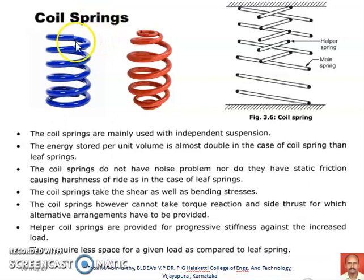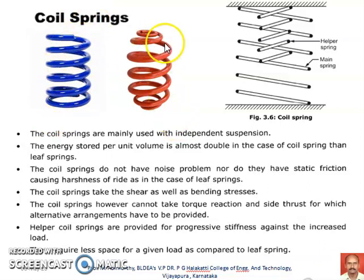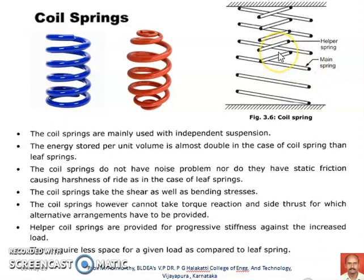Coil springs. As the name itself indicates, they are spiral coils used in the suspension system. One arrangement of the coil springs is shown here. We can see two types of coil springs with different sizes and characteristics — one is the main spring and another is the helper spring. Generally a single coil spring is used and designed depending upon the loads coming over the particular structure being supported.